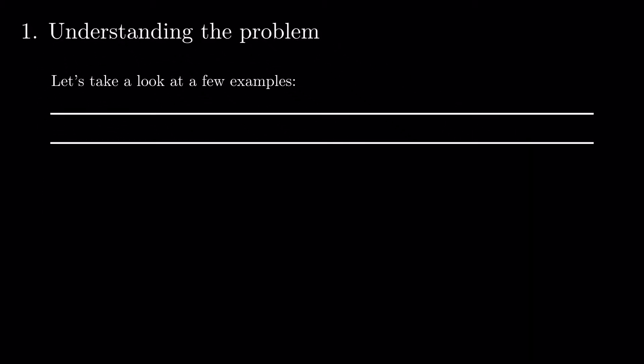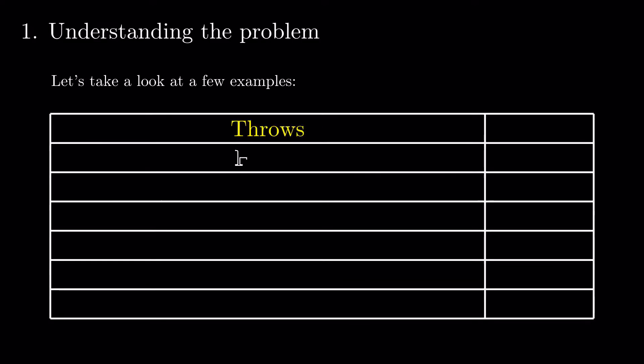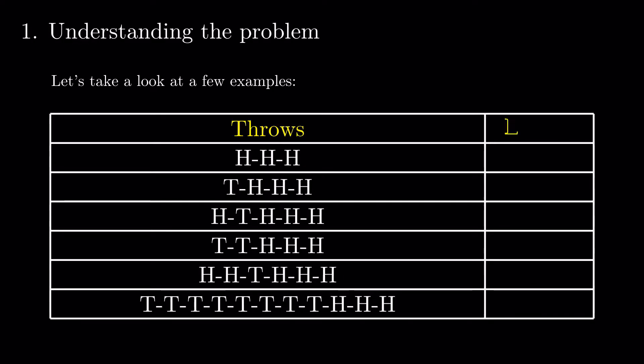Let's start by understanding how three consecutive heads can occur. We can look at some examples. The minimum number of tosses we need to make is three, as seen in the first sequence.